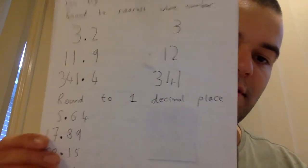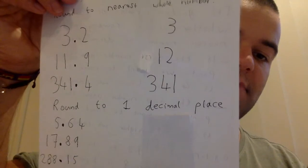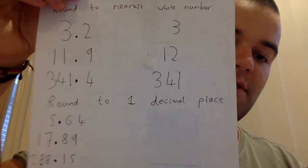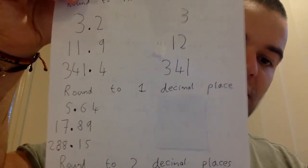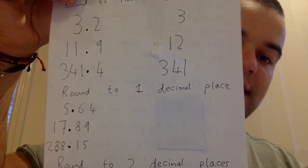So I've got three more there that I want you to round to one decimal place. So I want those rounded to one decimal place. So once again, you can pause this and have a quick go at rounding them to one decimal place.